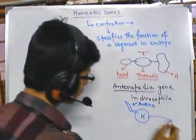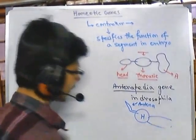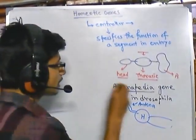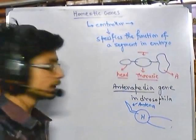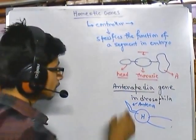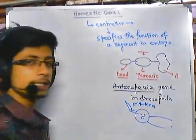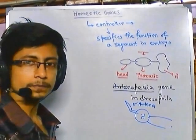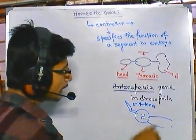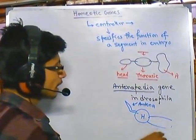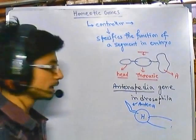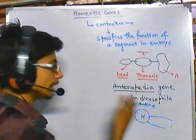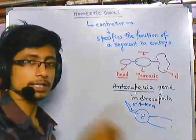This is the normal case — antenna grows from the head. But if we have a mutation in the Antennapedia gene, instead of developing antenna onto the head, it can develop somewhere else in the body. Instead of developing a leg from the thoracic region, it can develop the leg from the head region. These are the changes caused by such mutations.